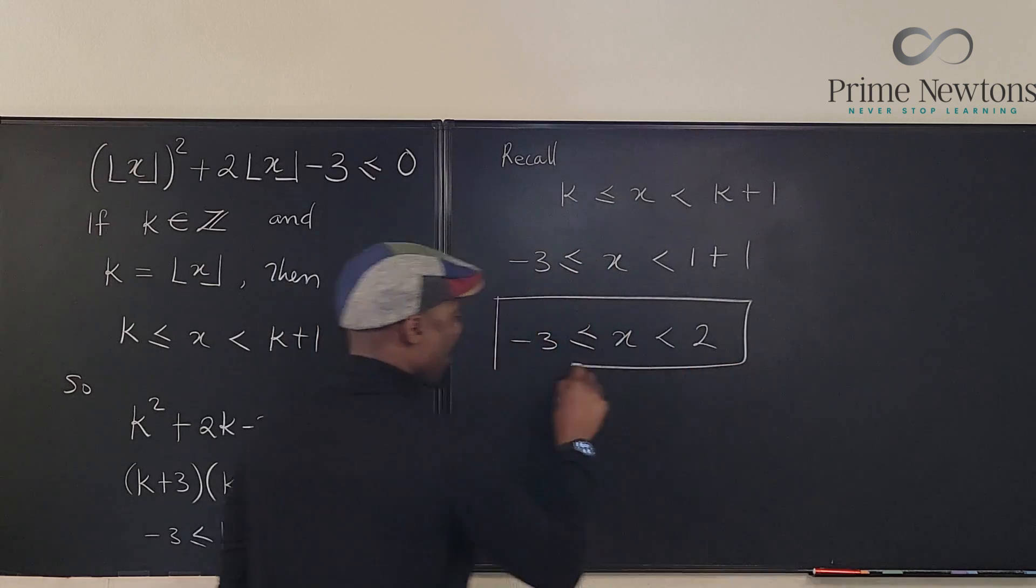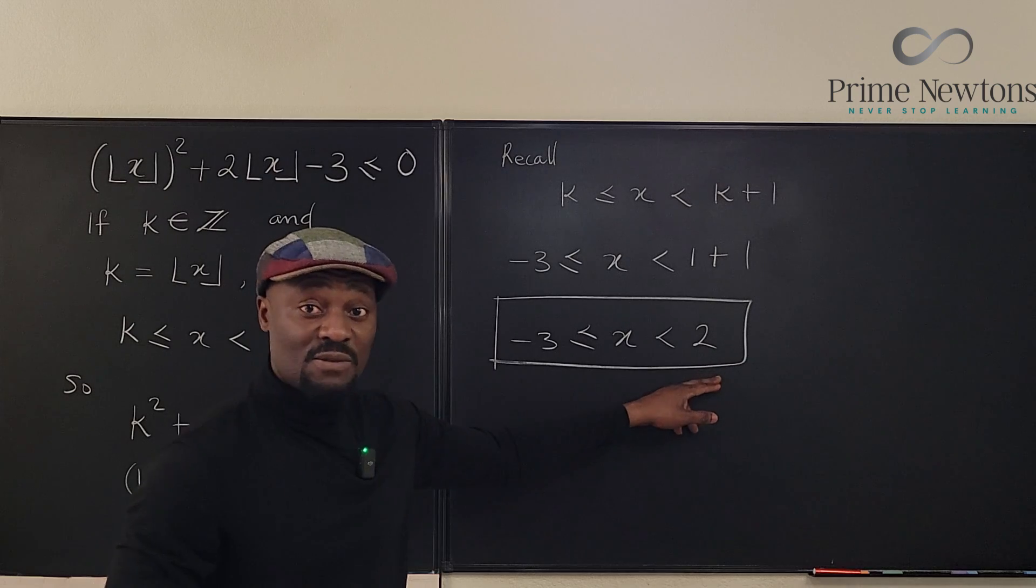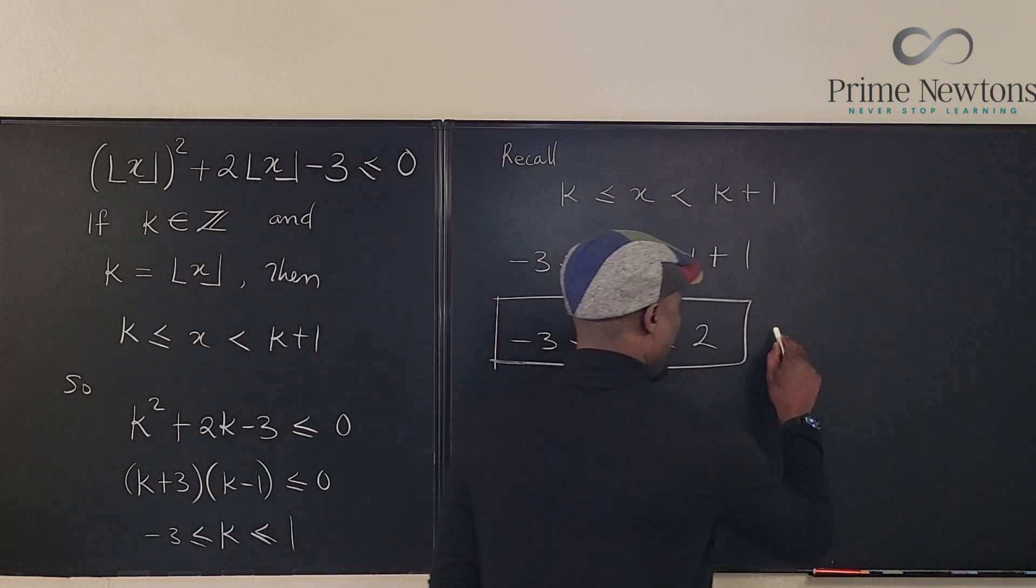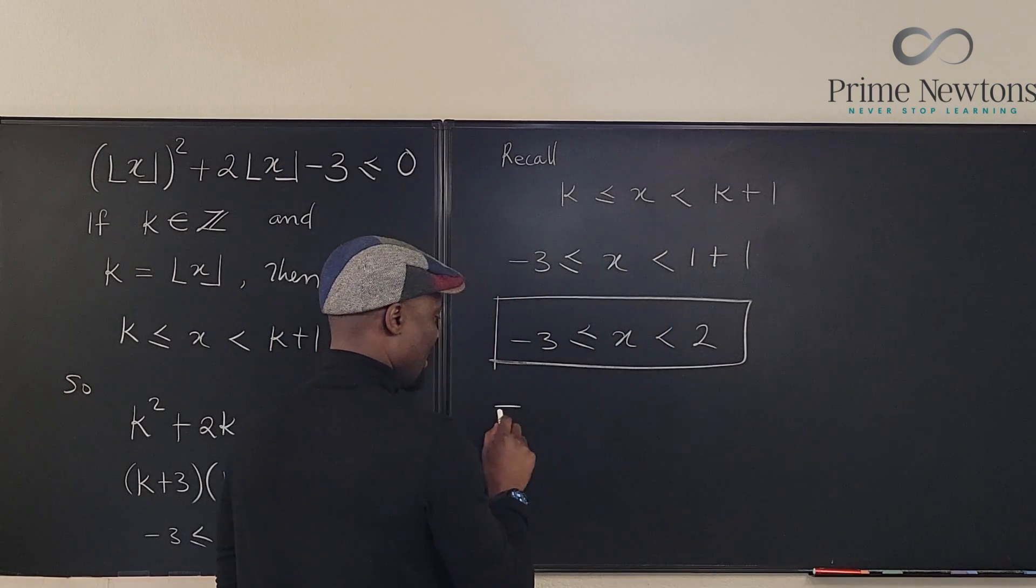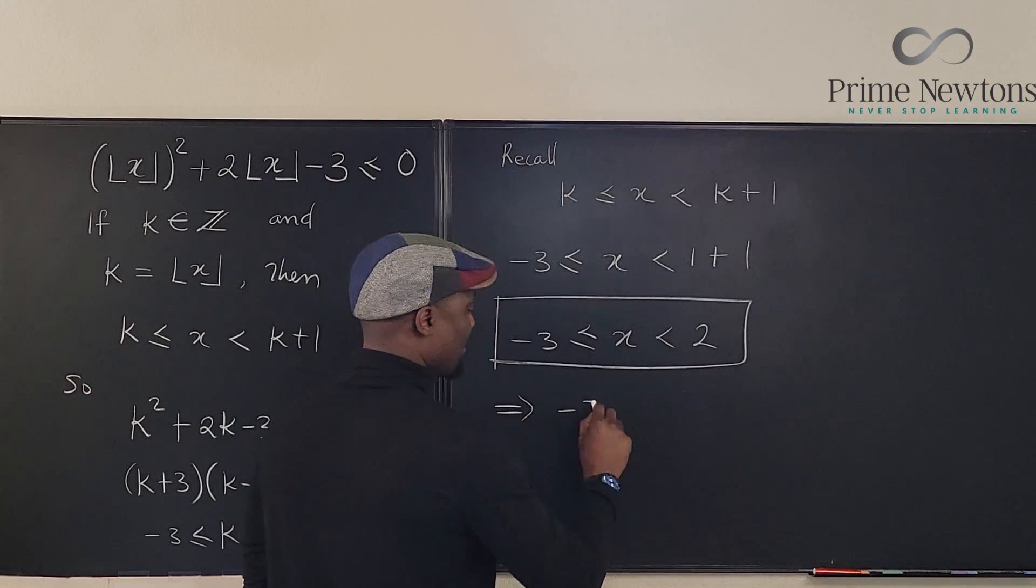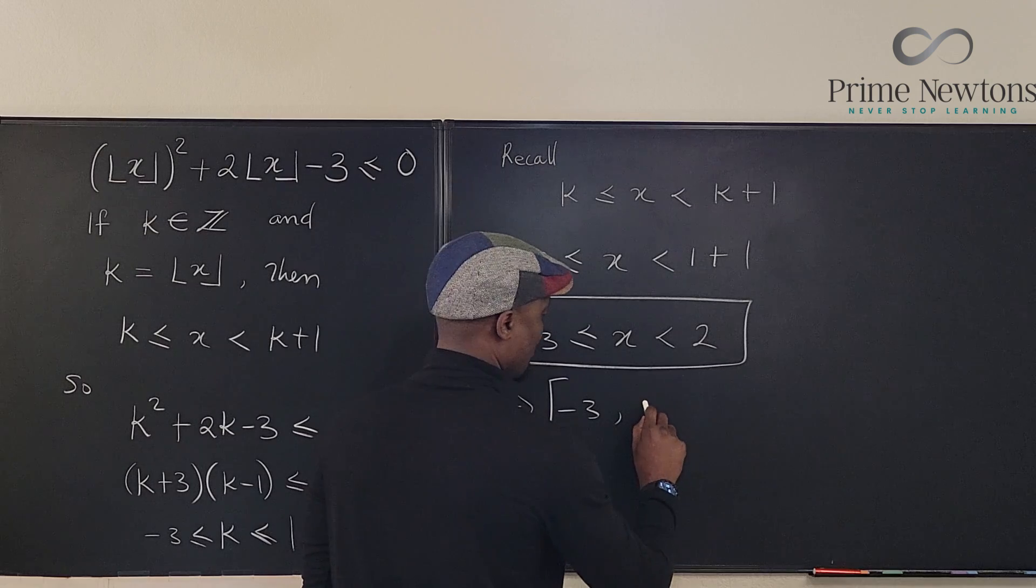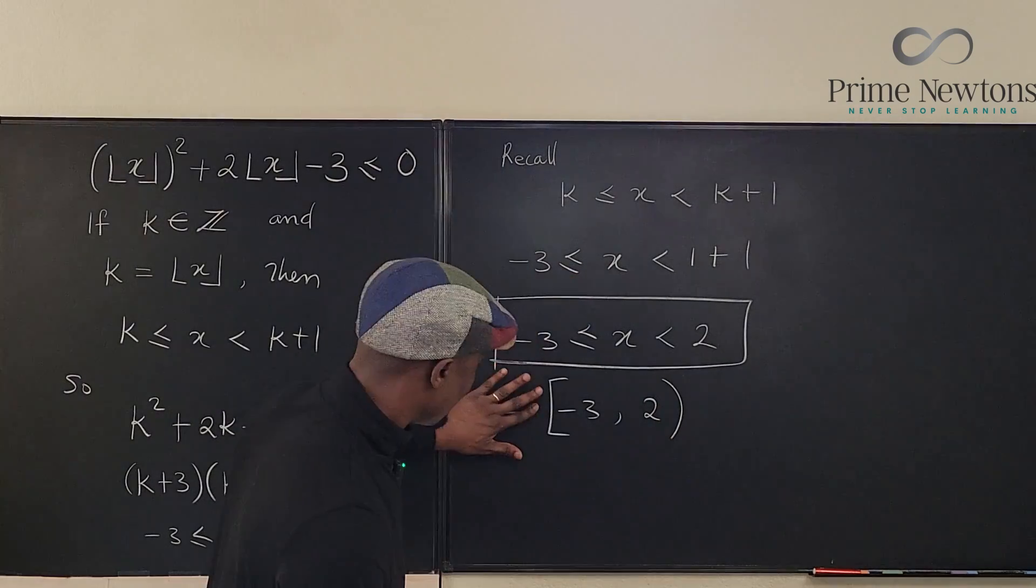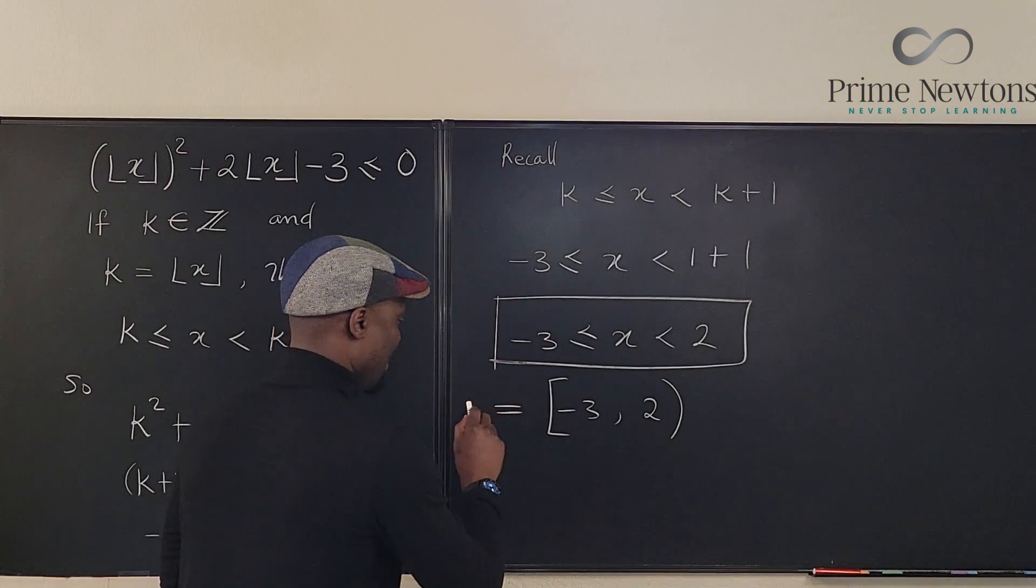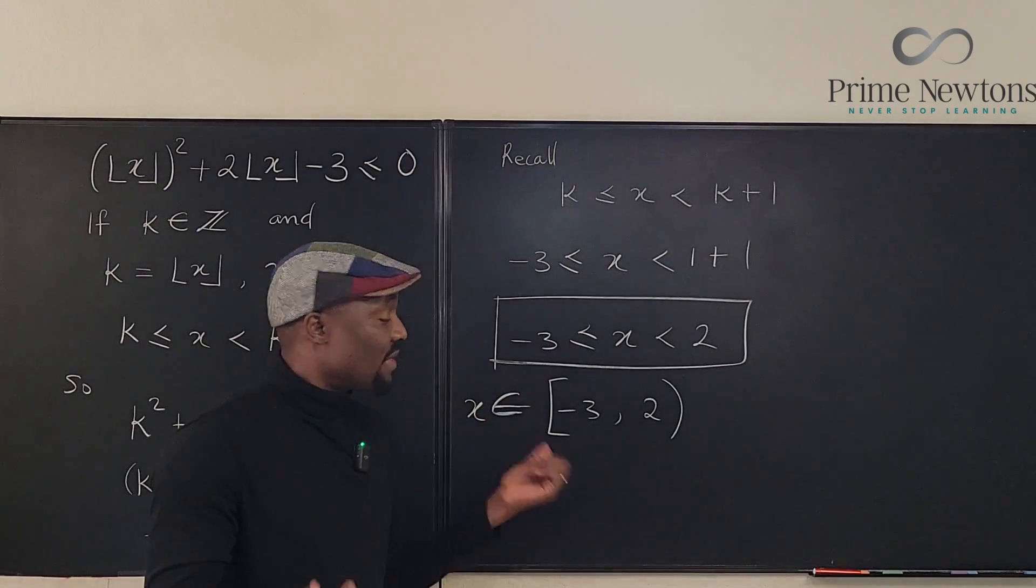This is the solution set. So if you want to write this in interval notation, you can say it is the same thing as negative 3, you put this around this and you write this as 2. X is in, so we can say X is an element. Okay, and that's it.